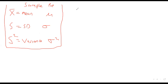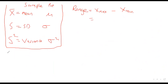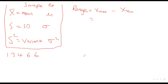Now we look at the range. The range is the difference between the highest and the minimum number. Our dataset is 1, 3, 4, 6, 6, 8, 9. The highest number is 9 and the smallest is 1, so our range is 8.